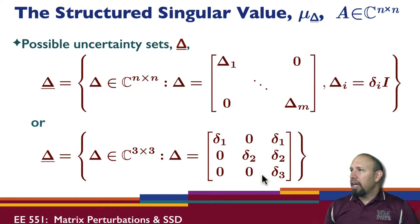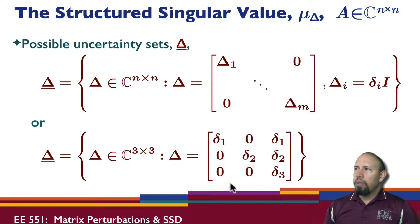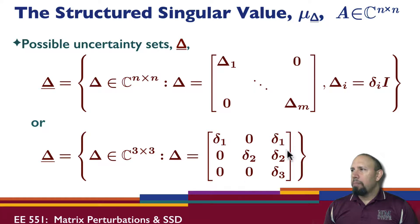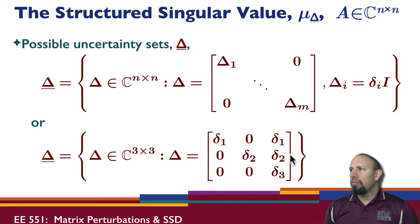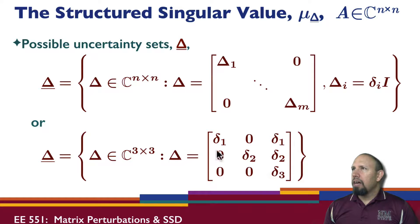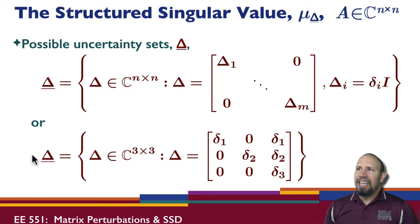Here's another uncertainty set example in a 3×3 case. Notice δ₁ has the same uncertainty in one row, δ₂ has two uncertainties, and δ₃ another. Our matrix A may have uncertainty in various places — remember there are nine places in a 3×3, and here five of them are uncertain. So this is an example of another uncertainty set. Delta-underbar is our uncertainty set; delta is going to be an element in that uncertainty set.